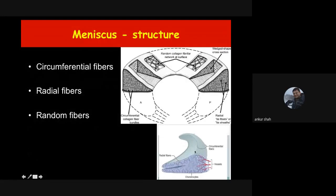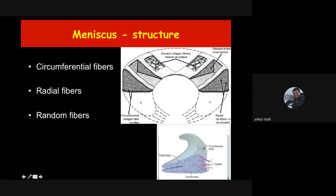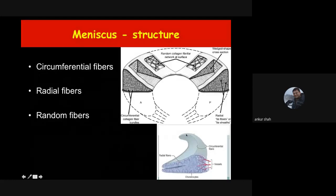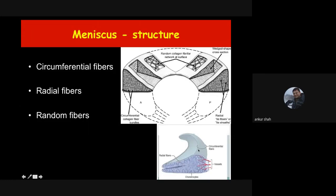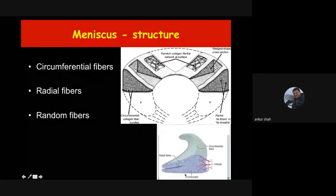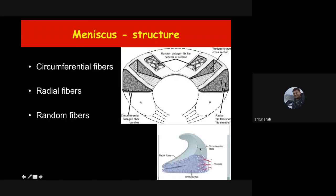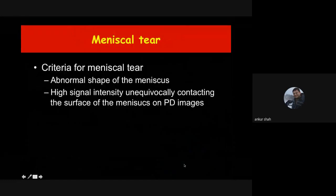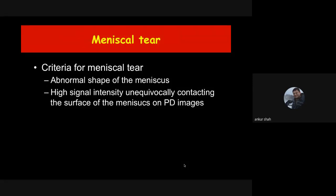When there is a radial or longitudinal tear, it has to break through the circumferential or radial fibers respectively, requiring significant force or trauma. Radial tears break through circumferential fibers, longitudinal tears break through radial fibers. That is why radial and longitudinal tears are seen almost always in patients of trauma, while horizontal tears can be seen in degenerative changes.